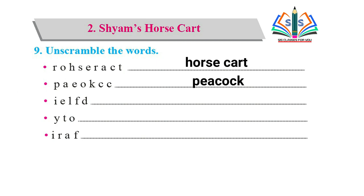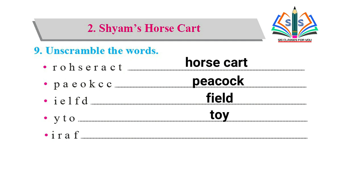Second one: p a e o k c c - इसका बनेगा peacock. Third one: i e l f d - इसका बनेगा field (f i e l d). Fourth one: t o t o y - इसका बनेगा toy. Fifth one: i r a f - इसका बनेगा fair (f a i r).